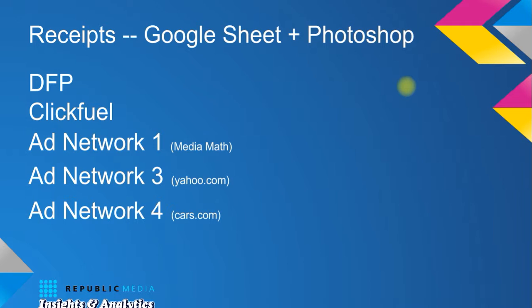Now we've got to get into the receipts. For our reports, we're going to use Google Sheets and Photoshop to translate what we get from DoubleClick, ClickFuel, and our ad networks such as AdNetwork1, MediaMath, AdNetwork3 — which is Yahoo. We don't want to tell clients the specific network names like MediaMath or Yahoo. Internally we say AdNetwork1, AdNetwork3, AdNetwork4, so that in client reports we can say 'this is from our internal Republic Media ad network.' Start getting used to saying AdNetwork1 instead of MediaMath, and AdNetwork3 instead of Yahoo.